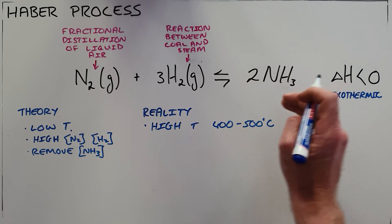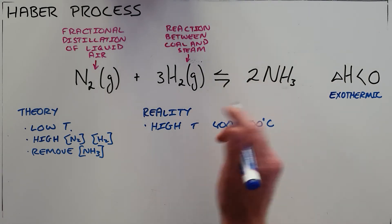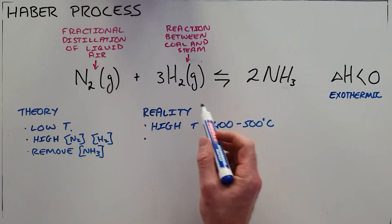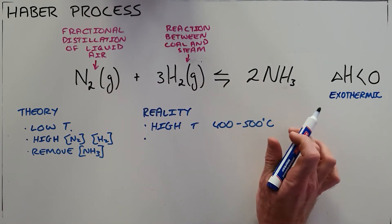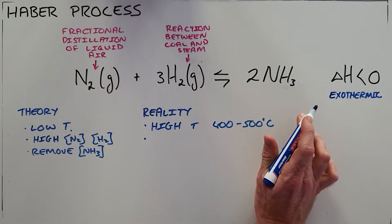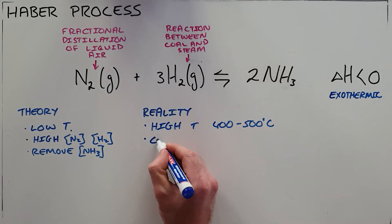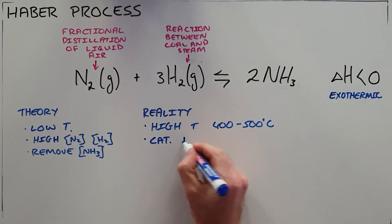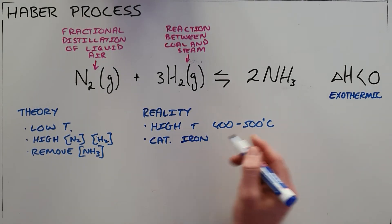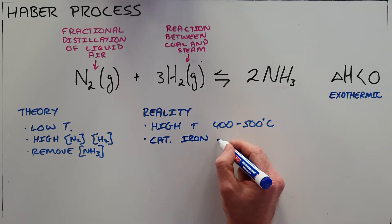What that does is it makes us favor the reverse reaction, so a number of changes are required to again favor the forward reaction that produces more of our products. The first one is that we add a catalyst. The catalyst we would use here is iron oxide, and that would speed up the rate of reaction.